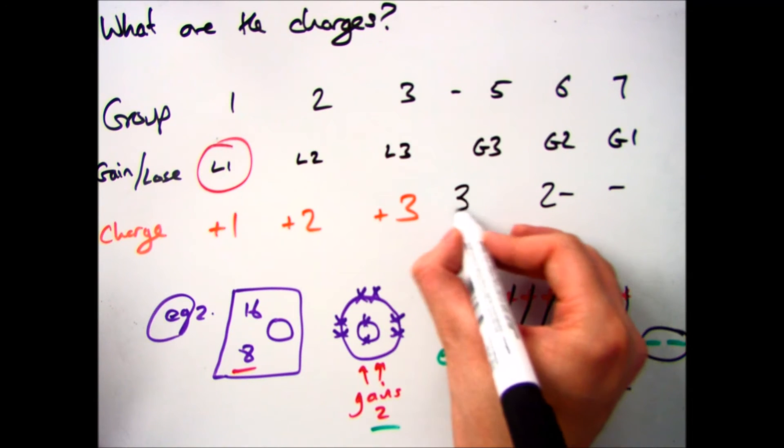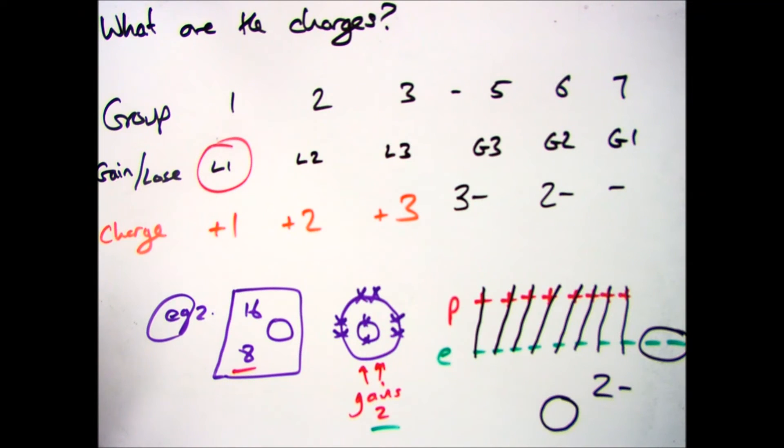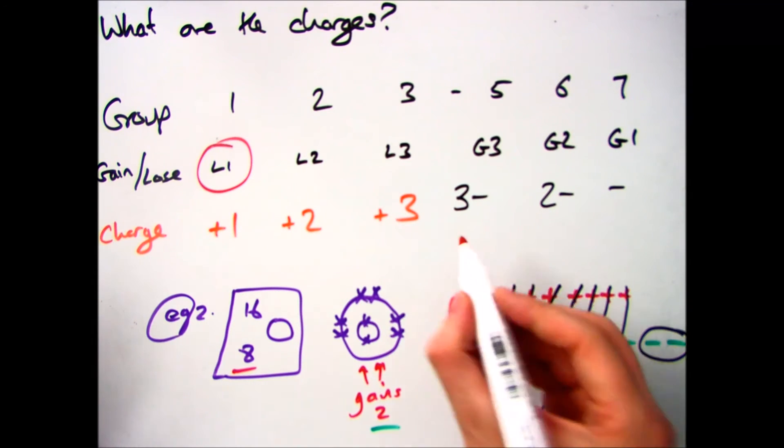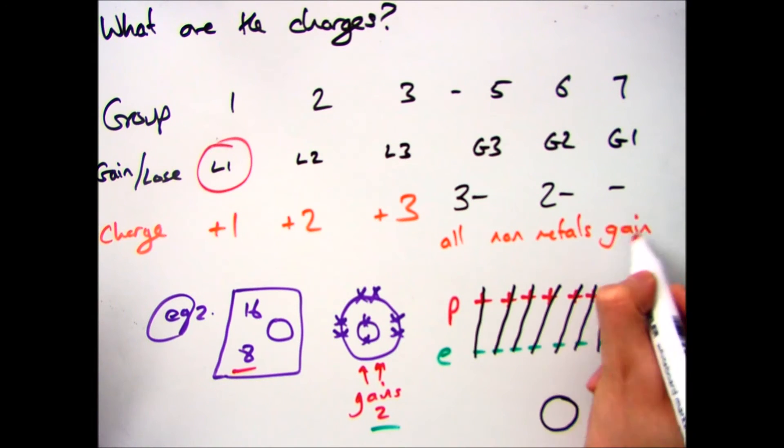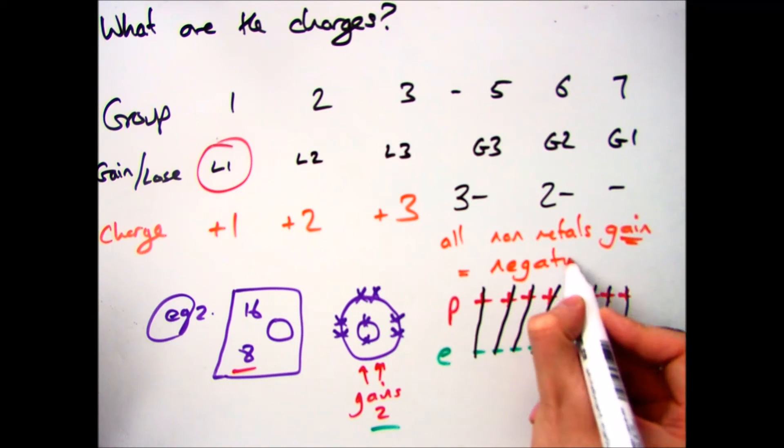So group 7 gains 1 becomes -1, and group 5 gains 3 becomes -3. Which in summary just goes to show that all non-metals are gaining electrons, and they all form negative ions.